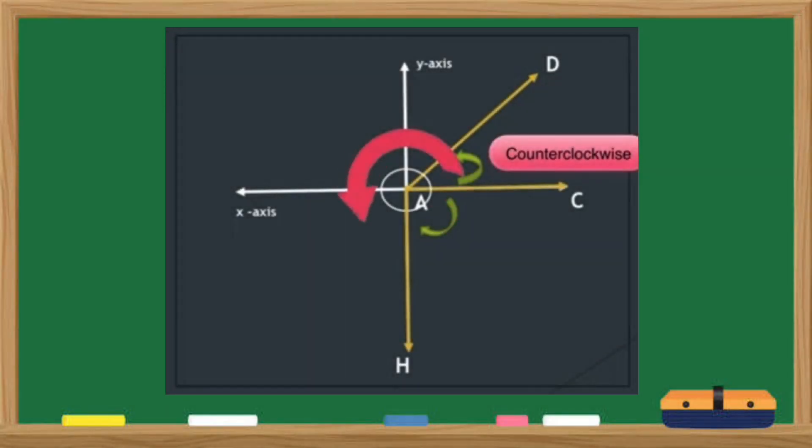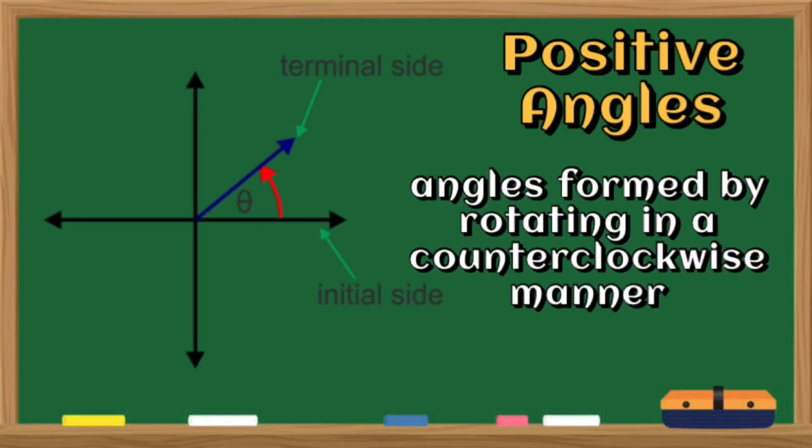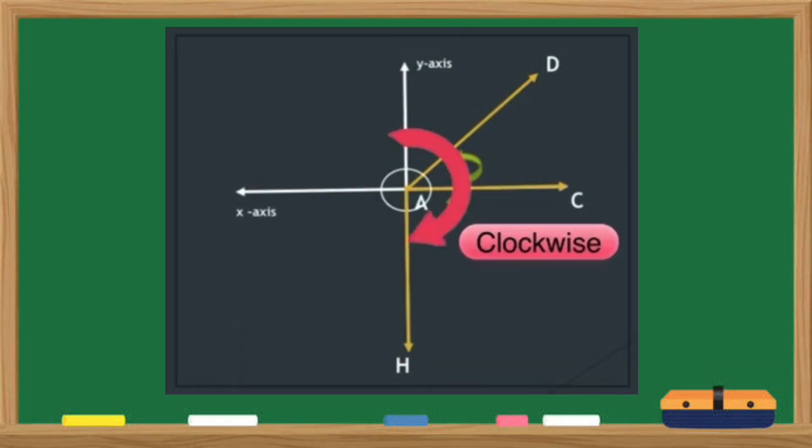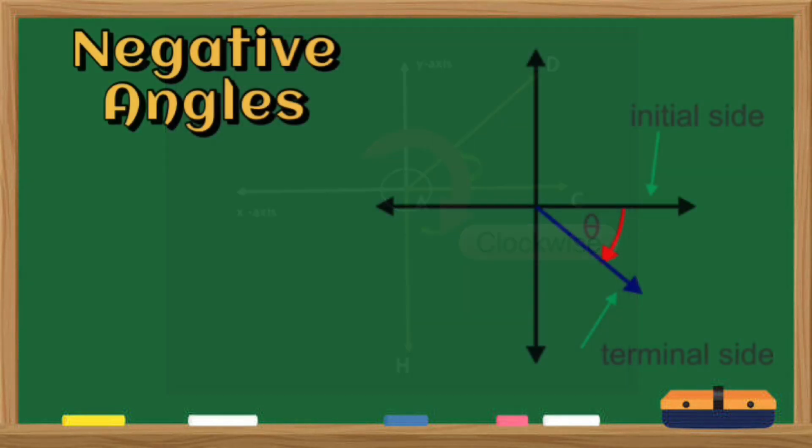We can also classify angles based on its rotation. When an angle formed by rotating a ray in a counterclockwise manner, then that angle is a positive angle. But when an angle formed by rotating a ray in a clockwise manner, then that angle is a negative angle.